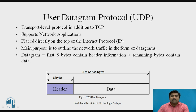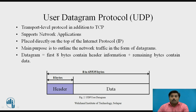UDP is present at the transport level in addition to TCP and supports network applications. It is placed directly above the Internet Protocol in the TCP/IP protocol suite. Its main purpose is to outline network traffic in the form of datagrams. A datagram has a first 8 bytes which is the header, and the remaining bytes are the data, as shown in the UDP user datagram format.